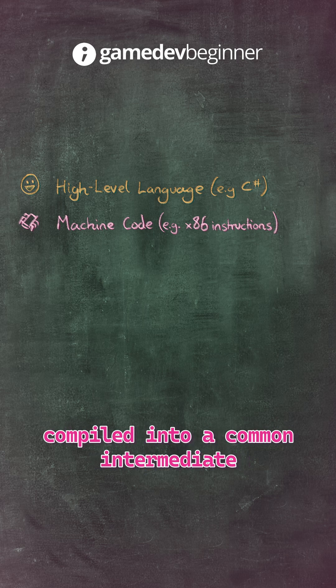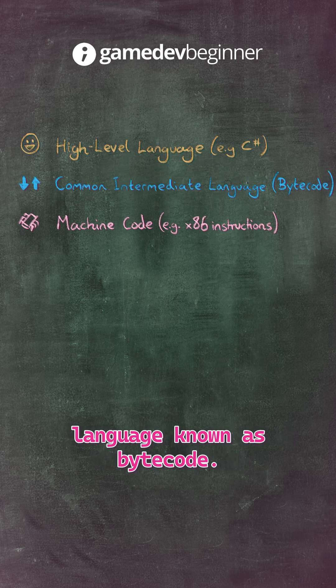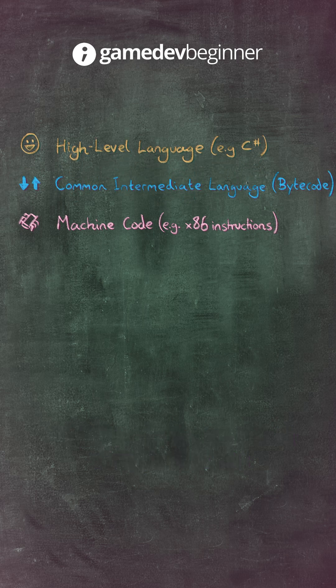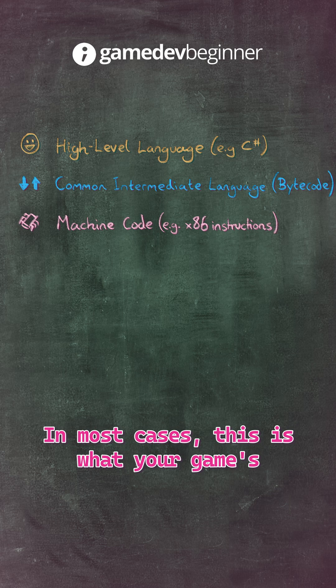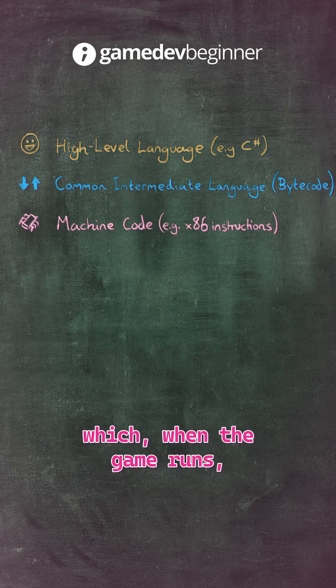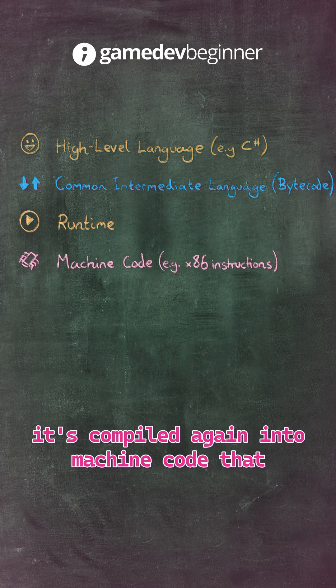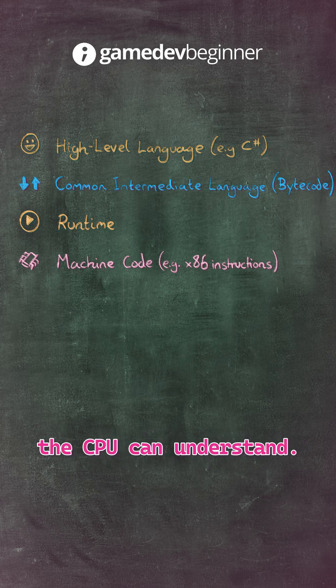First, when you build the game, it's compiled into a common intermediate language known as bytecode. In most cases, this is what your game's files contain, after which when the game runs, it's compiled again into machine code that the CPU can understand.